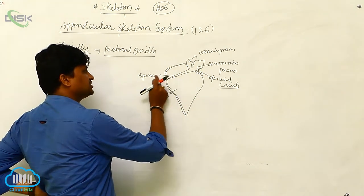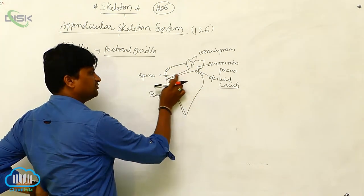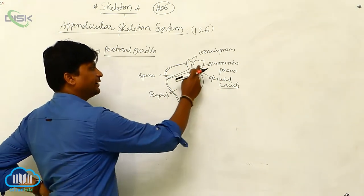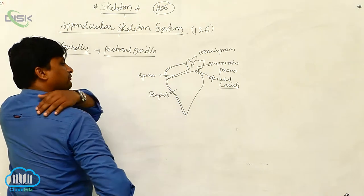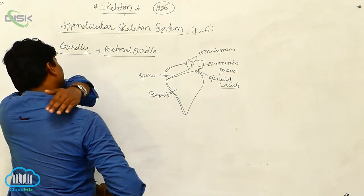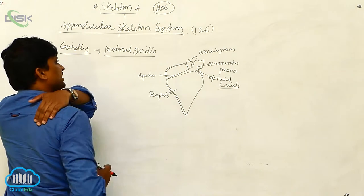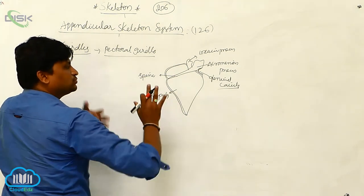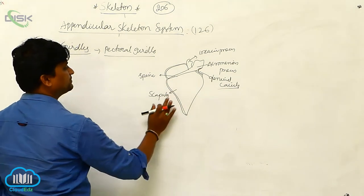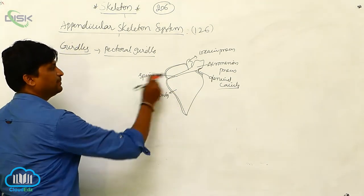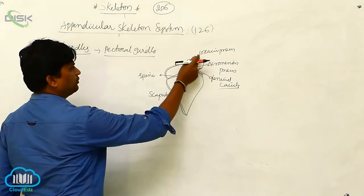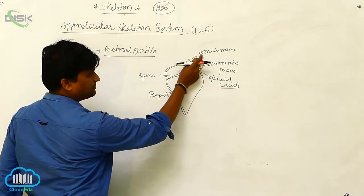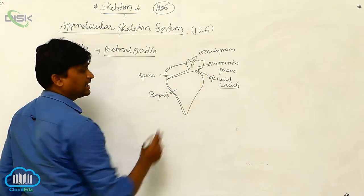The scapula has a spine-like structure, and one more process will be there — the process we call the acromion process. Just backwards from the acromion process is the formation of the scapula. It gives attachment for muscles on the ventral side. There is also the coracoid process.